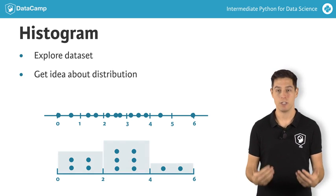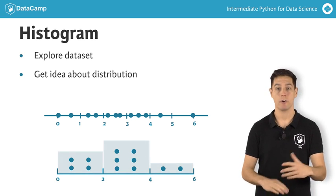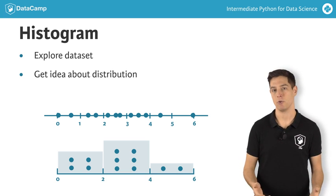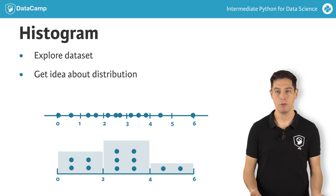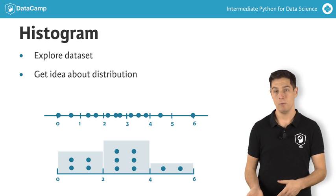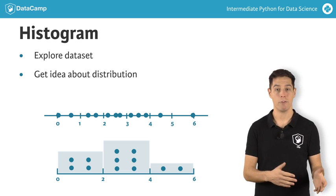Finally, you draw a bar for each bin. The height of the bar corresponds to the number of data points that fall in this bin. The result is a histogram, which gives us a nice overview on how the 12 values are distributed. Most values are in the middle, but there are more values below 2 than there are above 4.